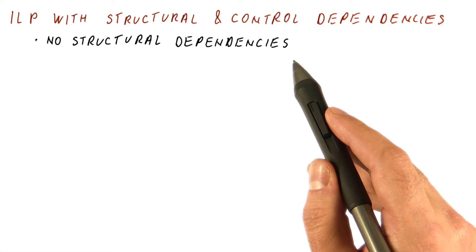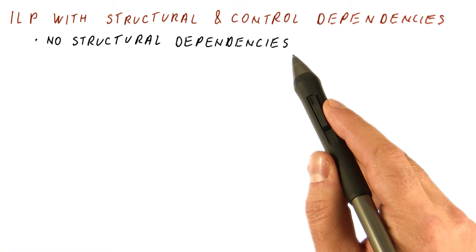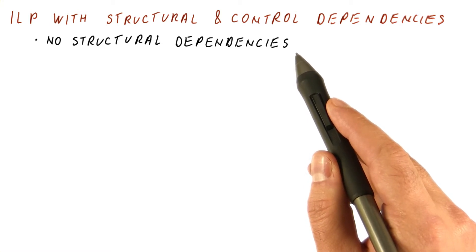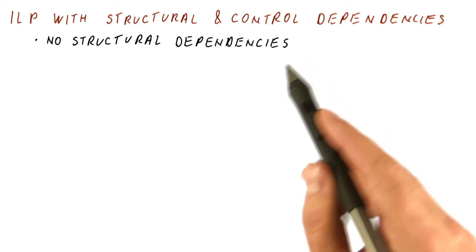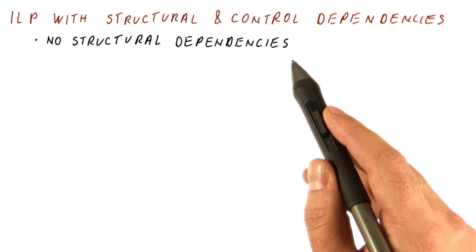This means any instruction that could possibly execute in the same cycle will execute in that cycle and not have to wait on some resource. Like for example, there being only one adder, so we can do only one add in a cycle. We can assume that we have an infinite number of adders, so if we want to do an add, we do it.